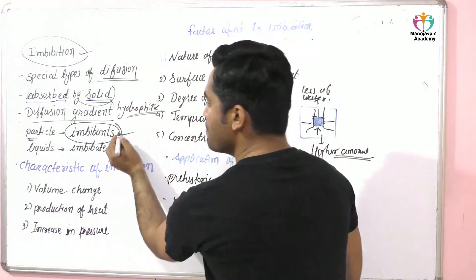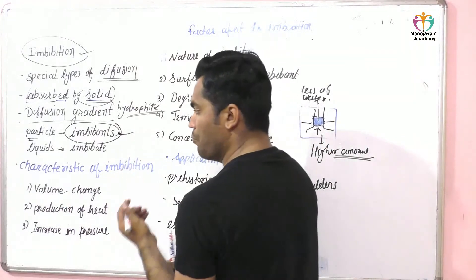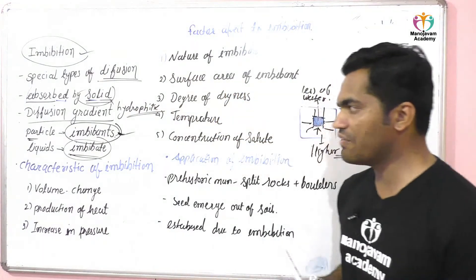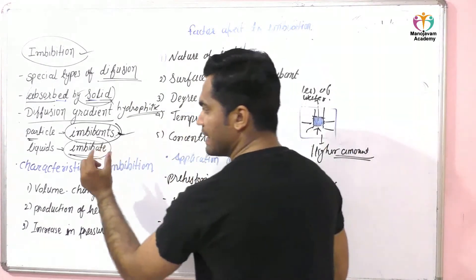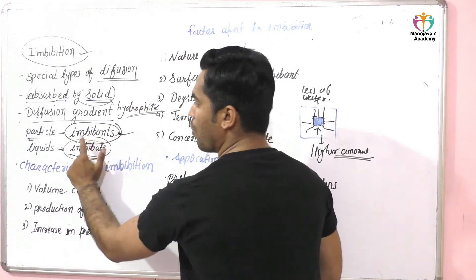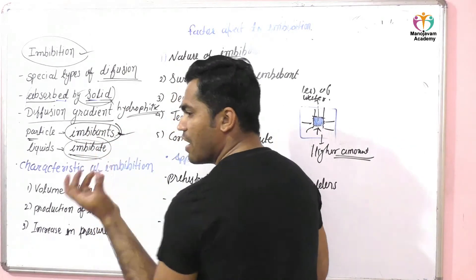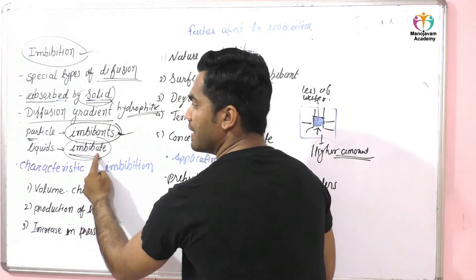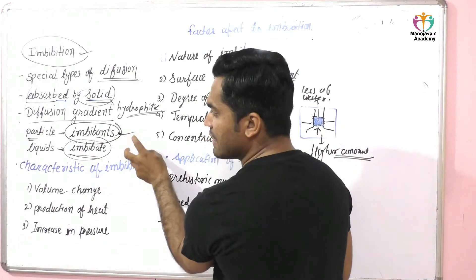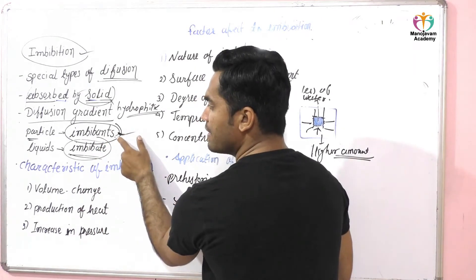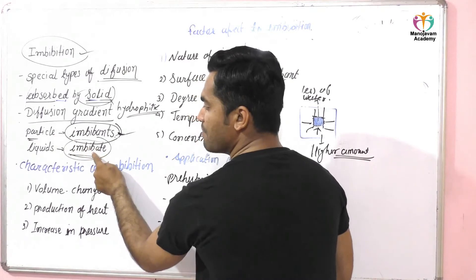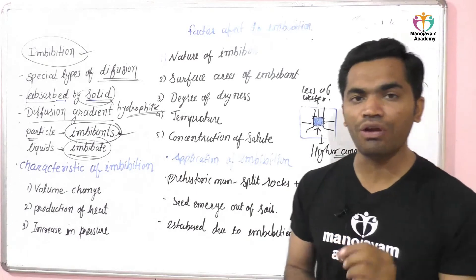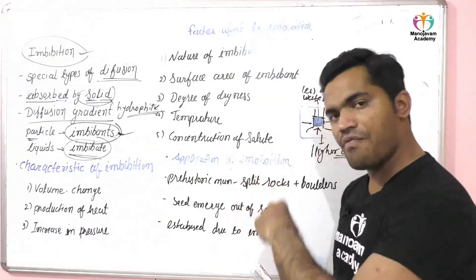The particle that absorbs the liquid is called the imbibant, and the fluid or liquid that is absorbed by this particle is called the imbibate. The difference is: imbibant is the particle, and imbibate is the liquid. This phenomenon is very useful in plants during seed germination.